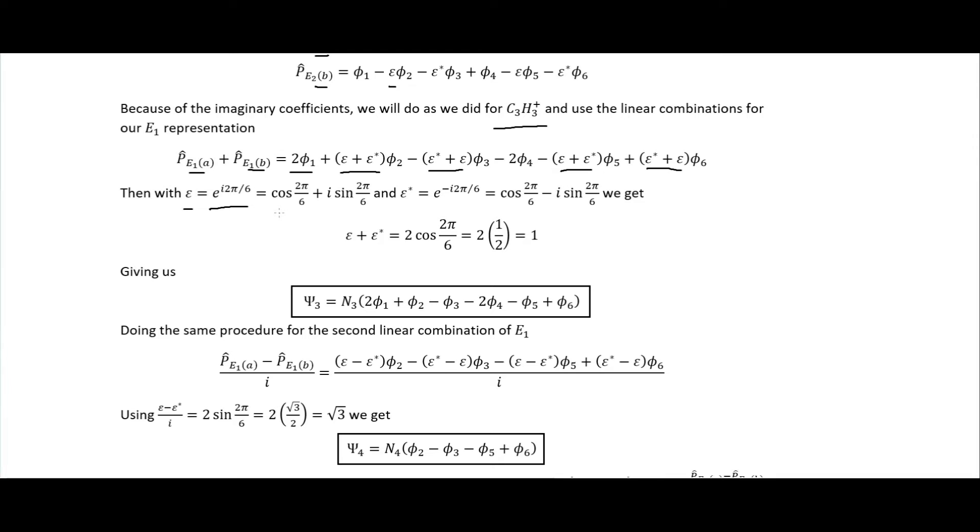And so we have the minus right there. So when we add those together, we get the 2 cosine of 2 pi over 6, which is 2 times a half, which gives us a 1. And so our third symmetry adapted group orbital is this right here. So we have this N3 here which is our normalization factor. So we do the same thing, the same procedure for the second linear combination of our E1, which had the subtraction and the i in the denominator here.